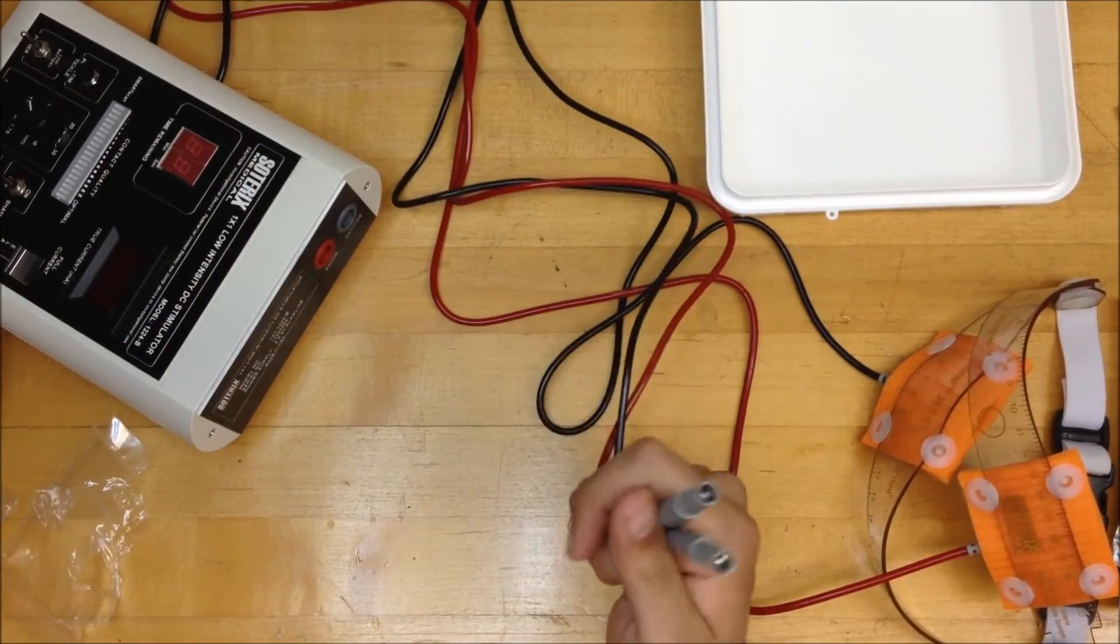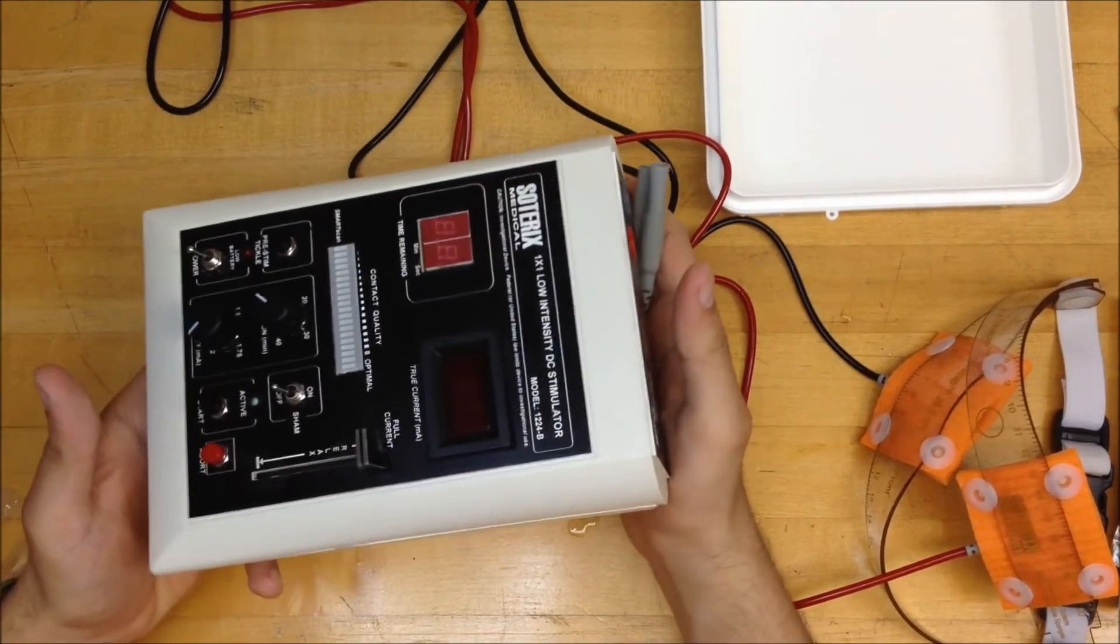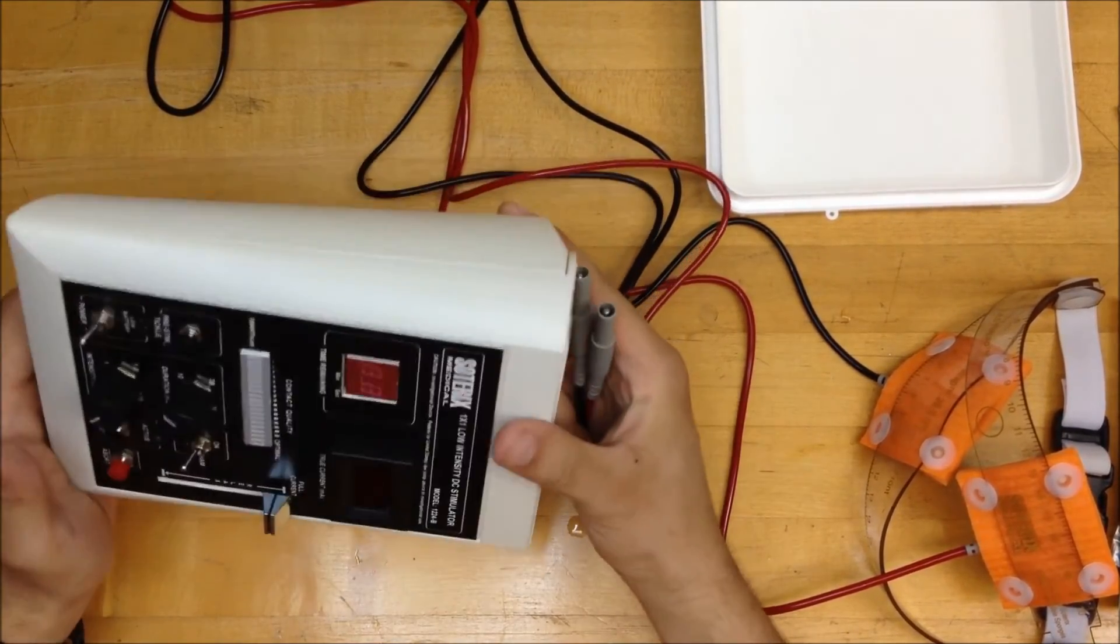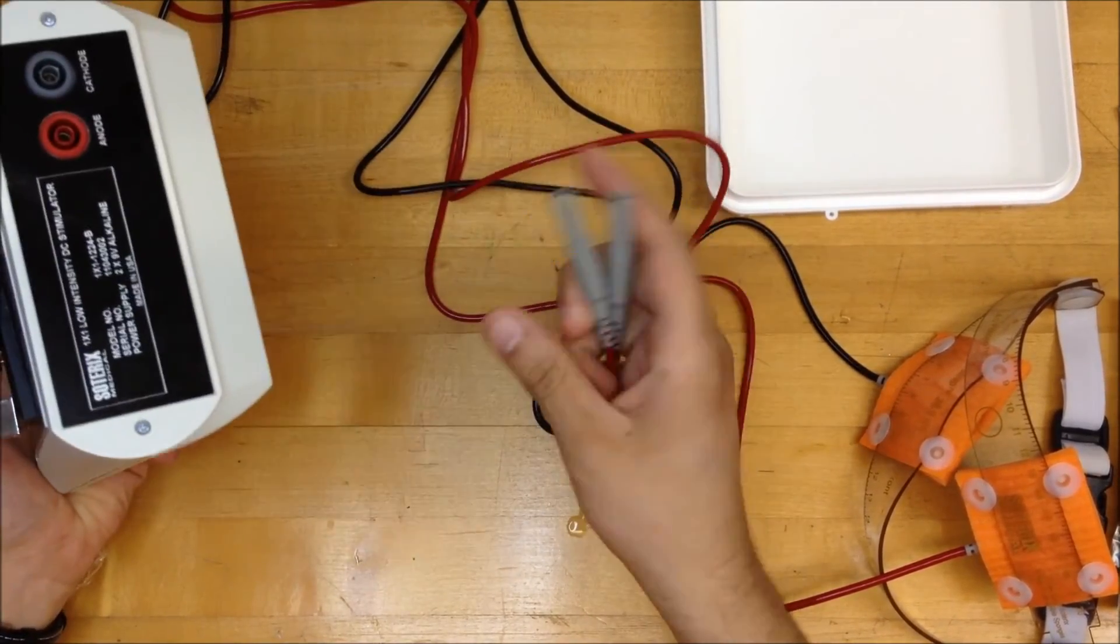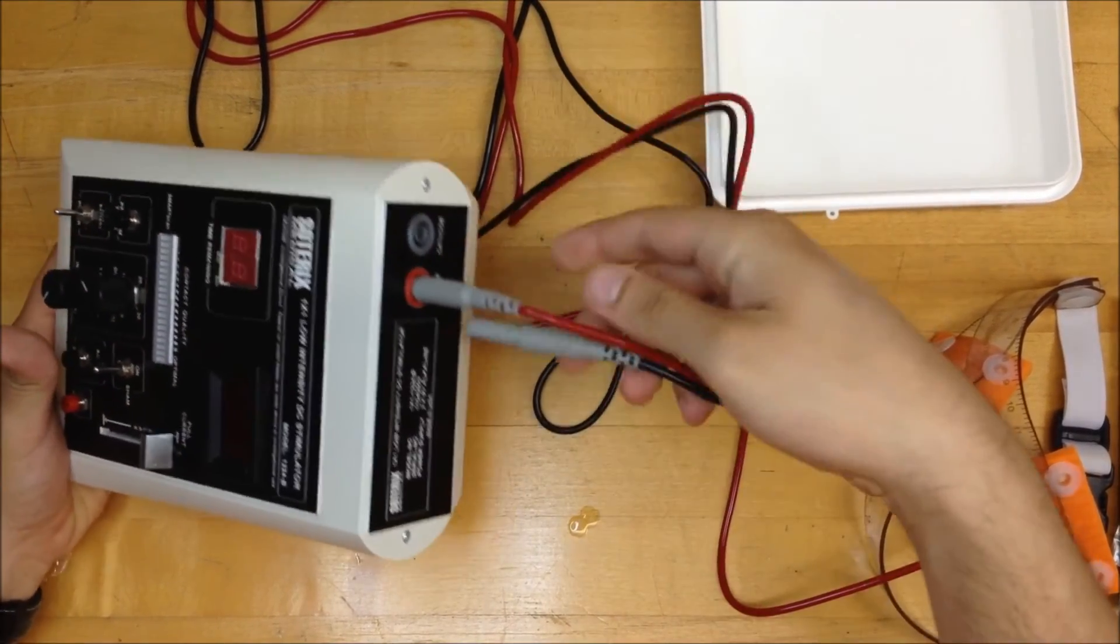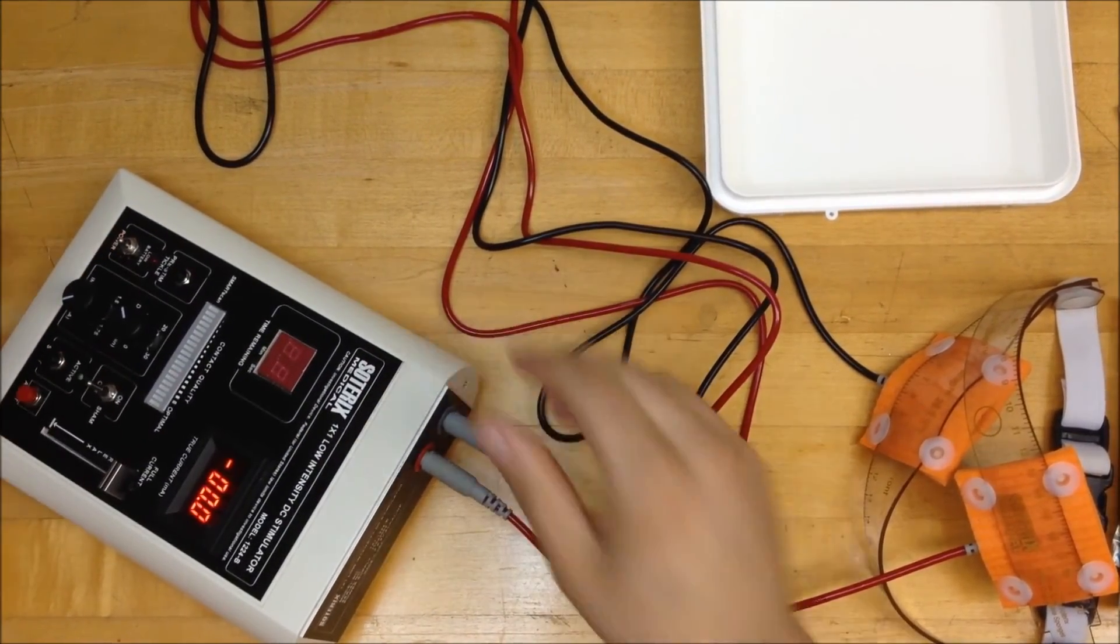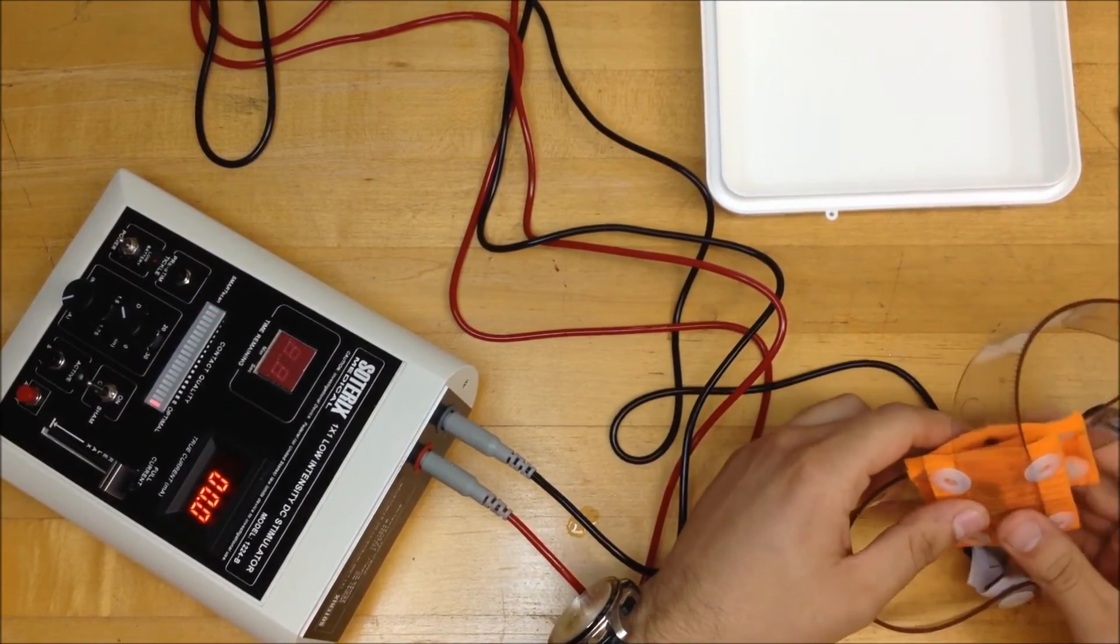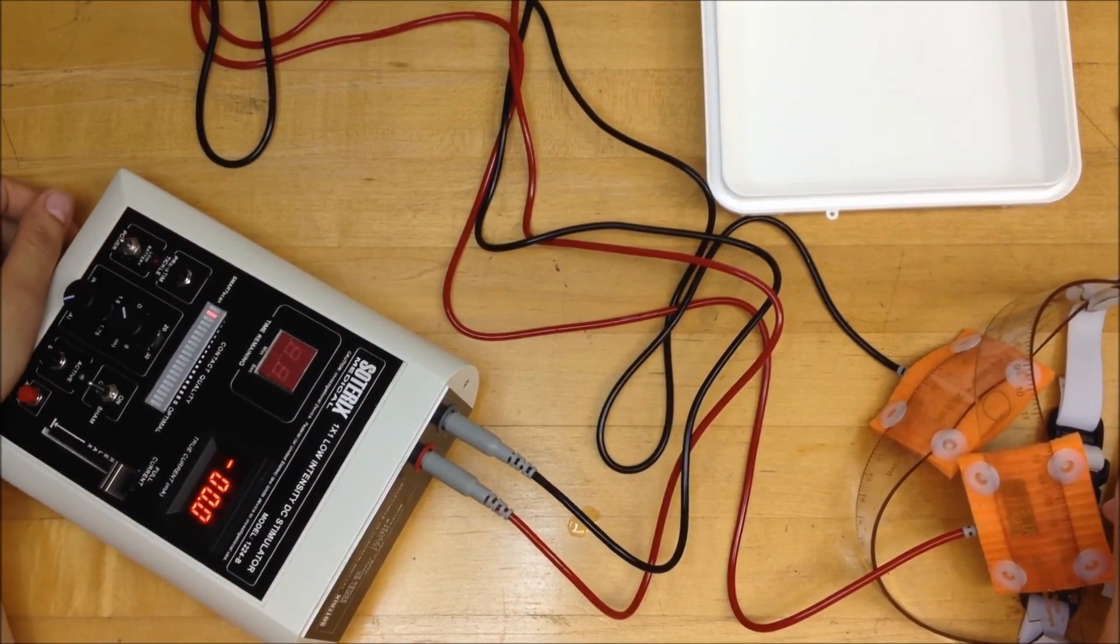Now, you connect your electrodes to the stimulator. I have here the Soterix Medical TDCS stimulator. This is the 1224B, which is an old version stimulator. They have a new stimulator right now, the 1300. If you're interested, you can check it out on their website. So you connect the anode and the cathode, and you can start your stimulation when you're ready. Thank you for watching this video and stay tuned for additional videos.